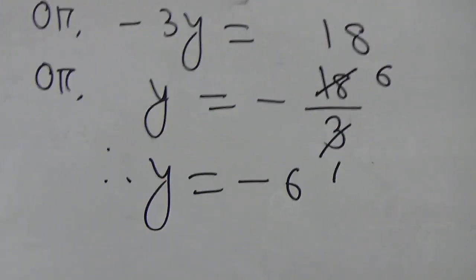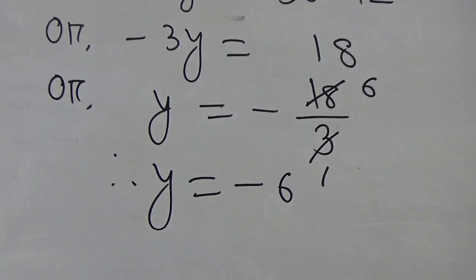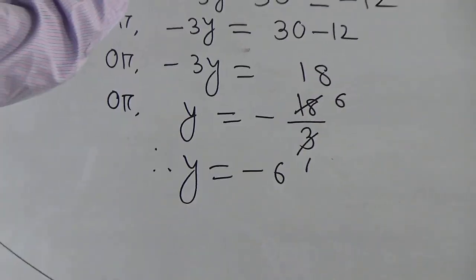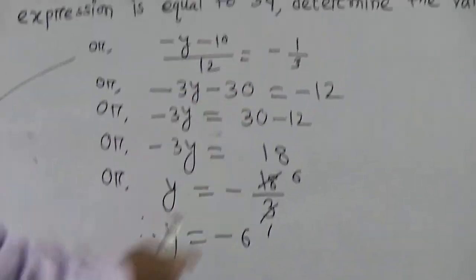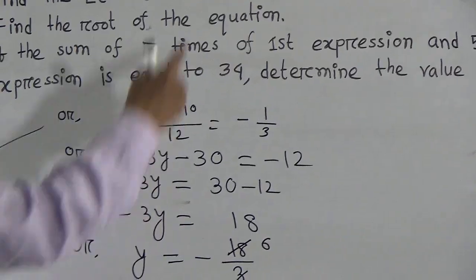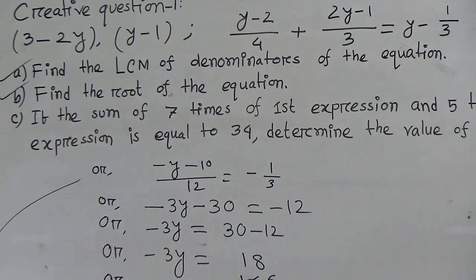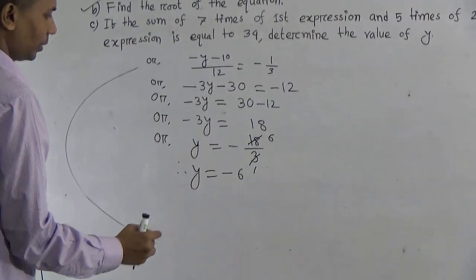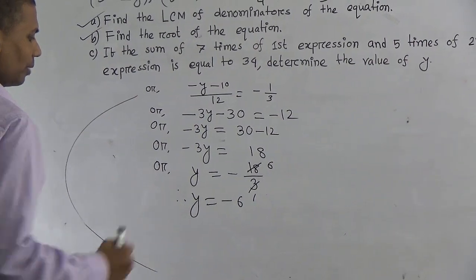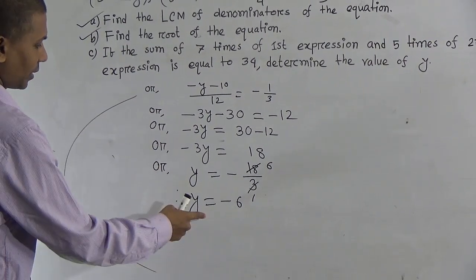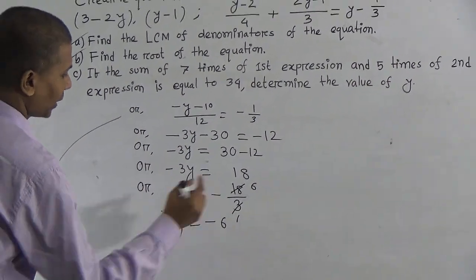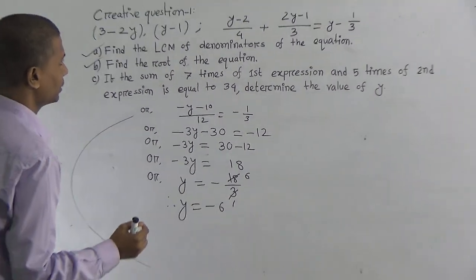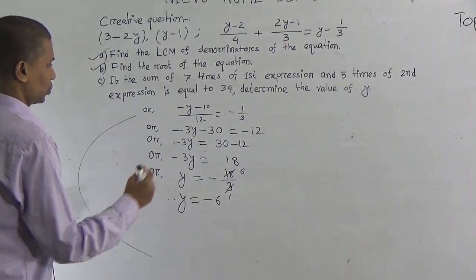B-number question: find the root of the equation. That means, in this equation, the root is y. So we have determined y equal to minus 6. This is our required root.